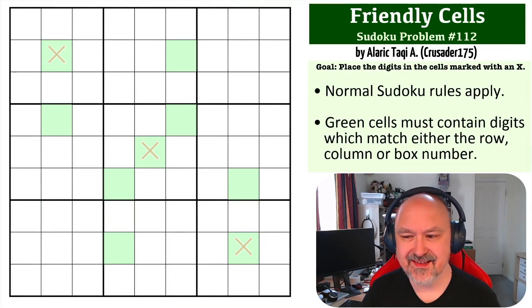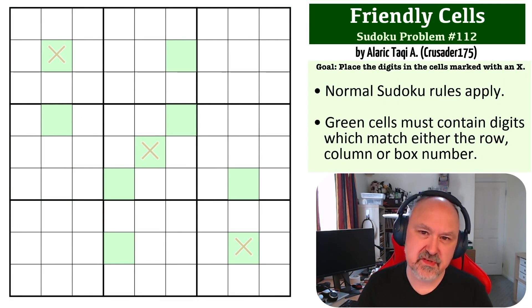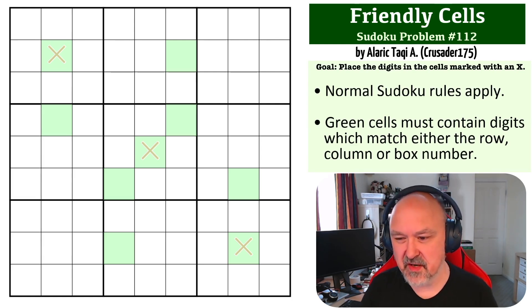Hey everyone, this is Bremster and this is problem number 112 in the Sudoku Problems series. This one was submitted by Alaric Taki A, also known as Crusader 175, and I've probably got the name pronunciation wrong and I'm sorry about that. This one was submitted a couple of months ago before my life imploded, so I'm sorry there's been such a delay on this series.